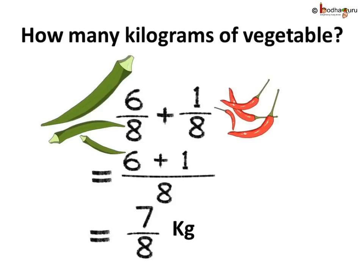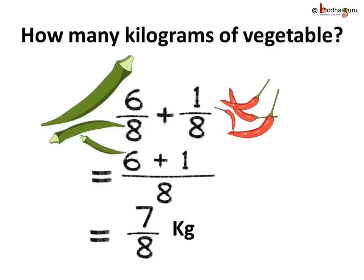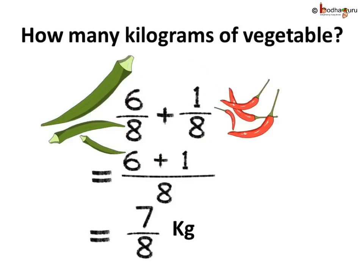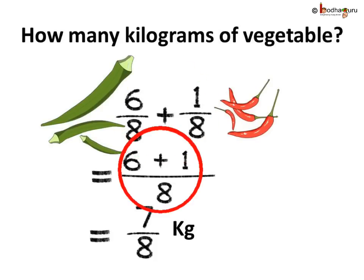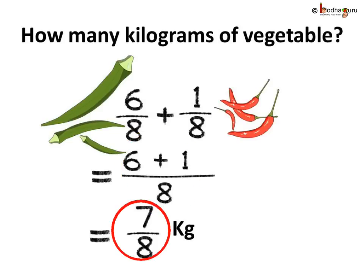As both fractions 6 by 8 and 1 by 8 have the same denominator, we can add easily. So 6 by 8 plus 1 by 8 is equal to 6 plus 1 by 8, which is equal to 7 by 8. So Khushi bought 7 by 8 kgs of vegetables in total.